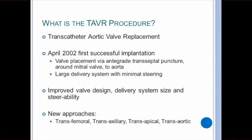The TAVR procedure is performed with catheterization to replace the aortic valve. The first case of successful implementation was in April 2002. Early on, the procedure required a transseptal puncture and the interventionist would navigate the stent through the mitral valve, often causing severe MR to reach the aortic valve. This was very challenging not only to navigate through the anatomy, but the delivery system was rather large and had minimal steering capabilities.